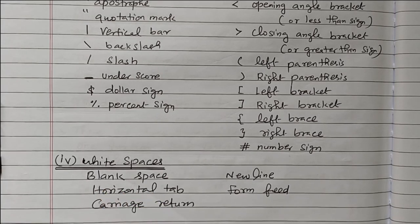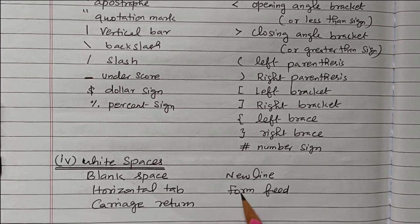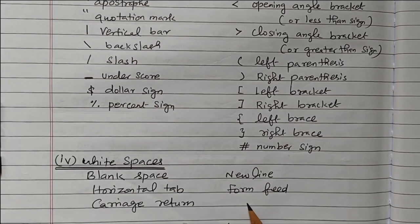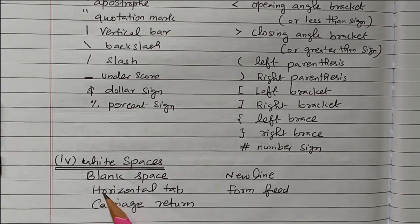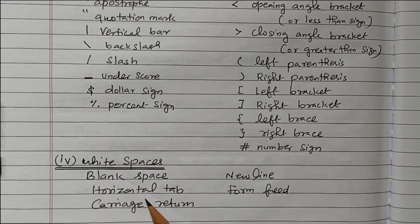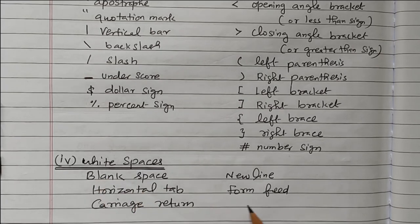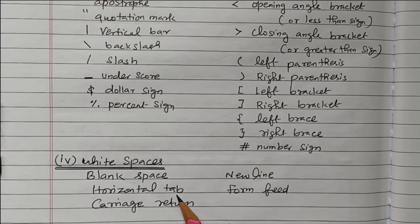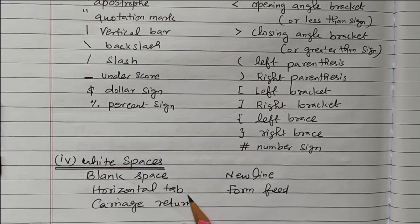Then the white space — that is blank space, horizontal tab, carriage return, new line, and form feed. These characters do not give any visible value but produce blank space. That is called white space. It will create blank space, or go to a new line, or advance a tab — moving some four or five spaces forward. That is why it is called white space.